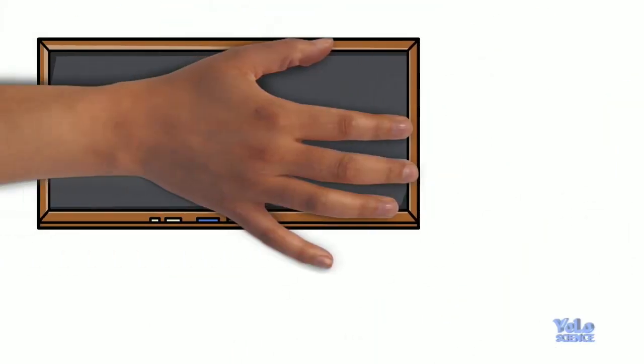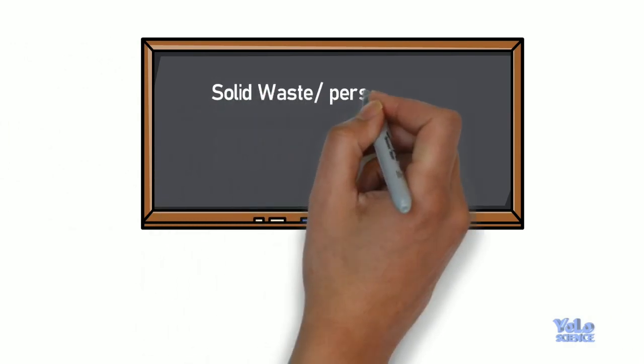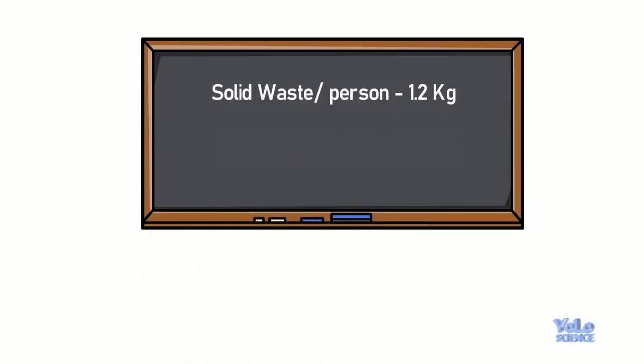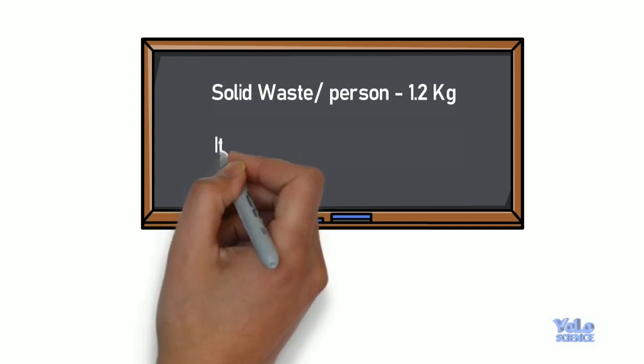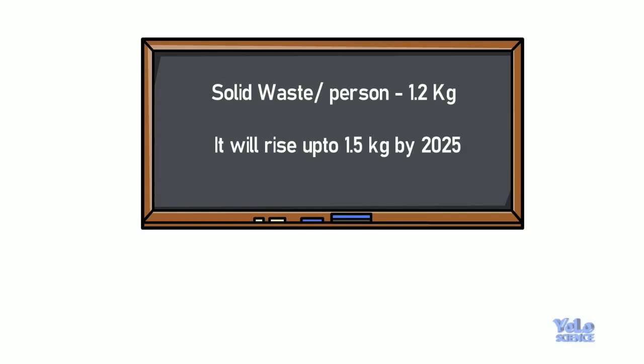According to the World Bank report, the average global municipal solid waste generation per person on daily basis is about 1.2 kg and the figure is expected to rise up to 1.5 kg by 2025.